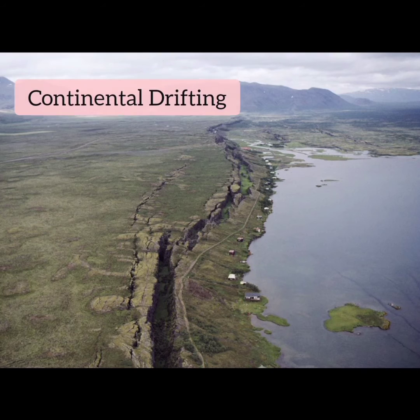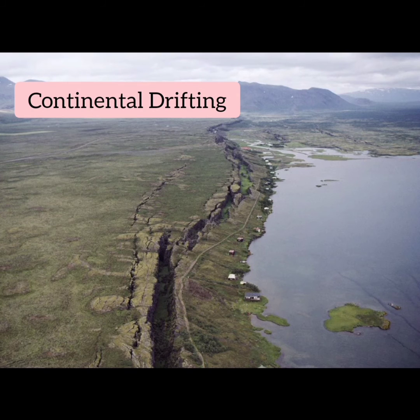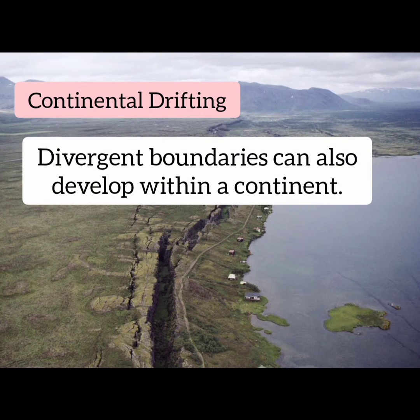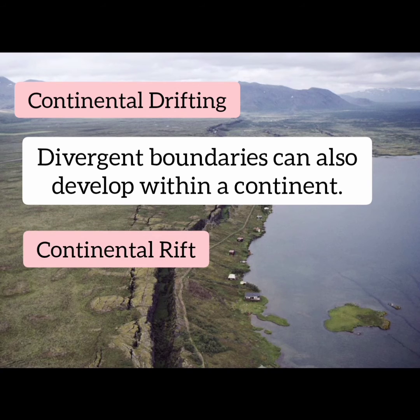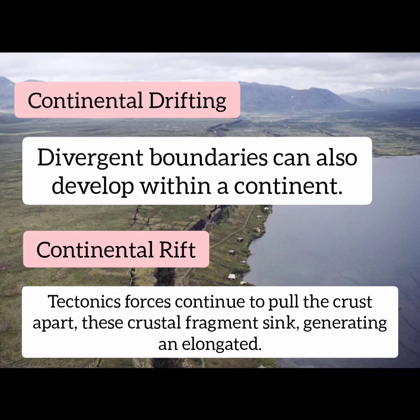Seafloor spreading is a mechanism that operates along the oceanic ridge system to create new seafloor. Divergent boundaries can also develop within a continent, forming a continental rift. As tectonic forces continue to pull the crust apart, these crustal fragments sink, forming an elongated rift basin.